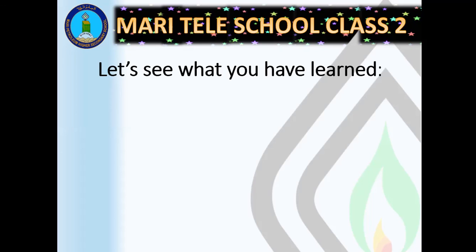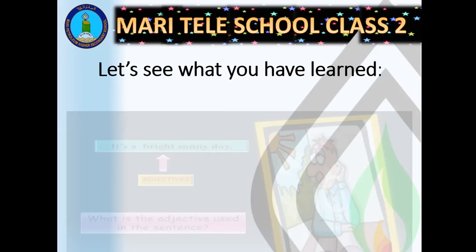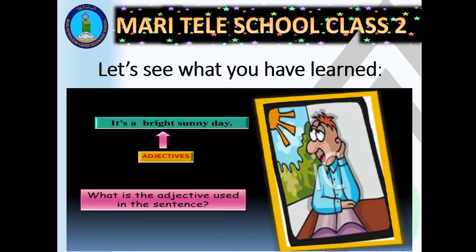Let's see what you have learned so far. Are you ready? Here is question number one for you: 'It's a bright sunny day.' What is the adjective used in this sentence? The day is bright and sunny — so we have two adjectives here: bright and sunny.